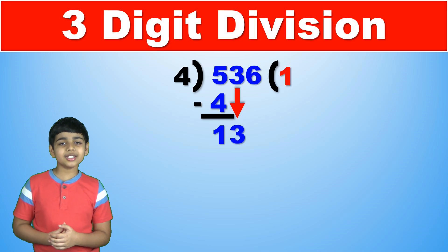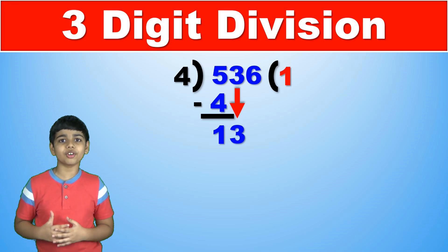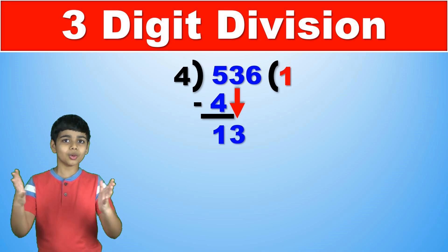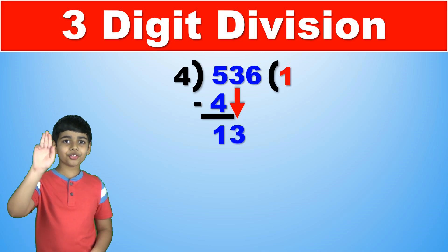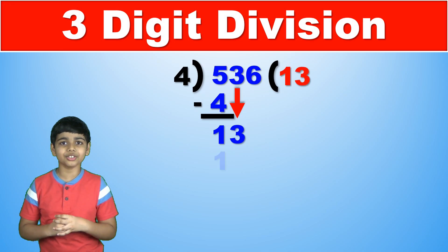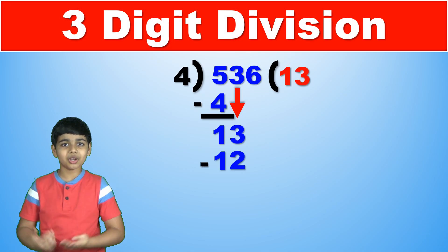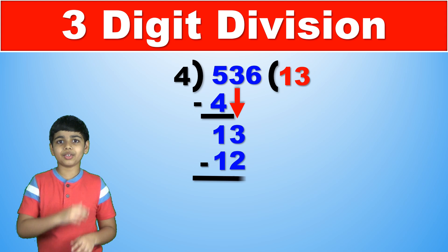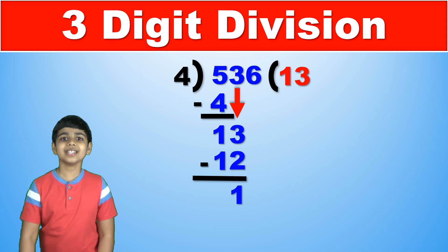So what is the greatest multiple of 4 under 13? Well that is 12 which is 4 times 3. So 3 is the next digit of the answer and 4 times 3 is 12. So we write 12 there. Now 13 minus 12 is 1.